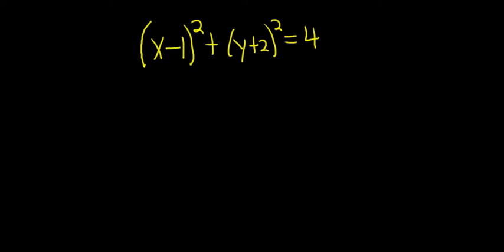The first thing we have to do is find the center of the circle. To find the center, all you have to do is look at these numbers here and switch the signs. So there's a negative 1, that's going to become a positive 1. And there's a positive 2, so that becomes a negative 2.